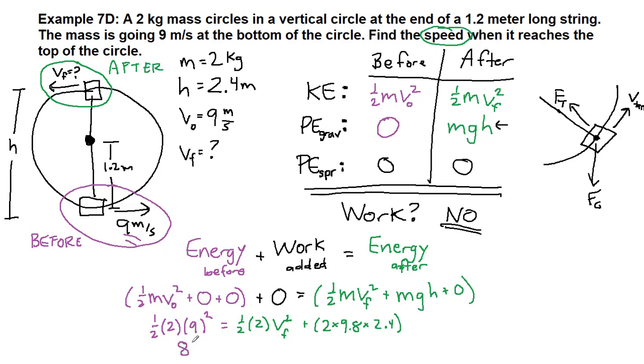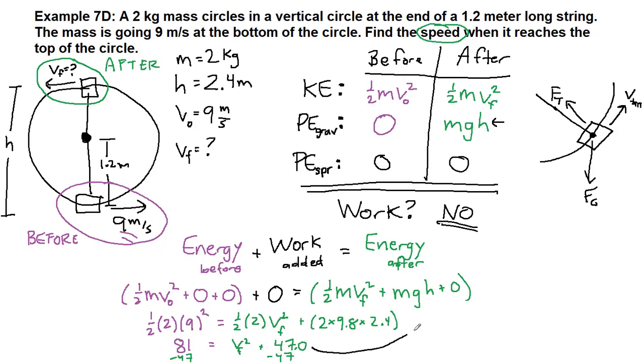All right, so when we simplify that we have 81 on the left. On the right side this first term, 1/2 times 2, is 1 times v squared. And then 2 times 9.8 times 2.4 is 47. So we subtract 47 from both sides.